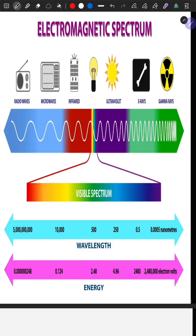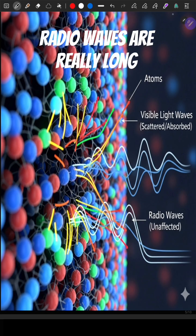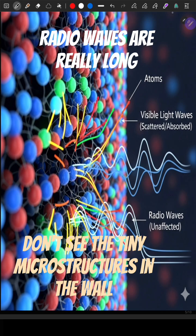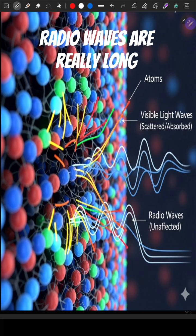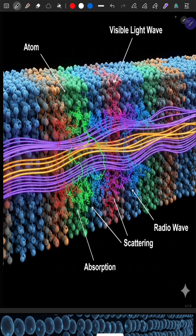Radio waves are really long, meters or more, so they don't see the tiny microstructures in walls. Light waves are just the right size to be scattered or absorbed, as shown in the figure.